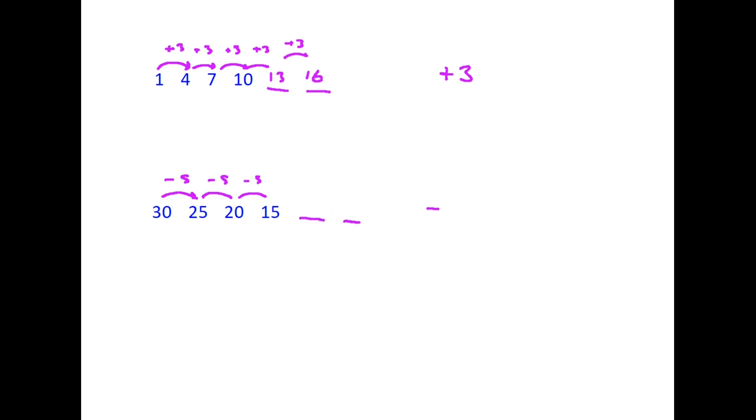So if we were looking again for the next two numbers it would be 15 minus 5. The next number would be 10 and it would be 10 minus 5 and the next number would be 5.